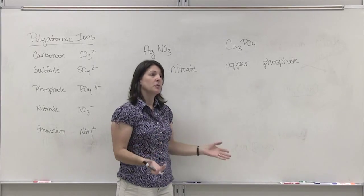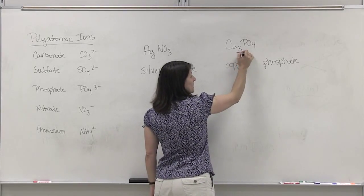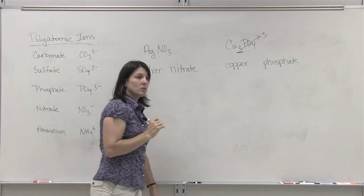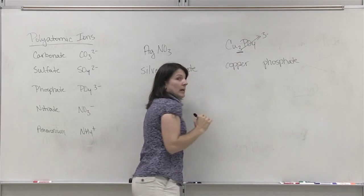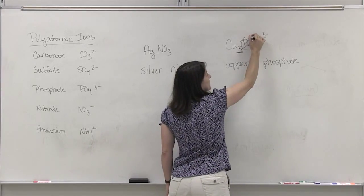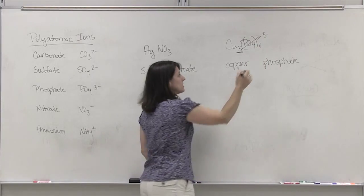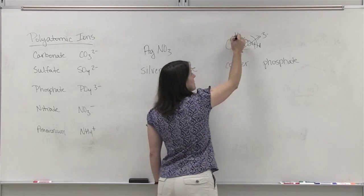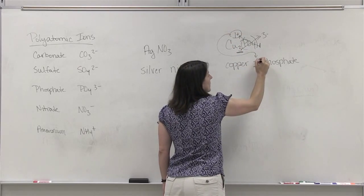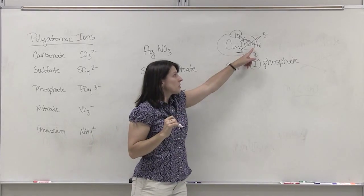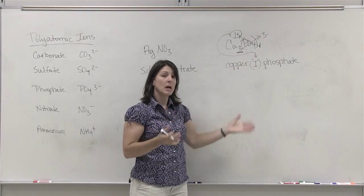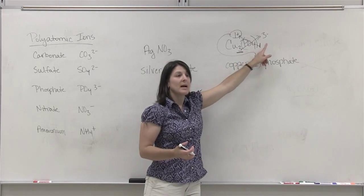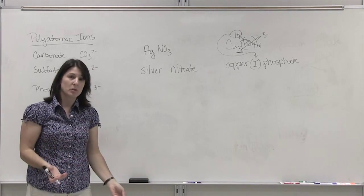To figure out the charge, we have to do the reverse crisscross. Our subscript for copper is 3. Crisscross up, that means the phosphate had a 3 minus charge. How many groups of phosphate do we have? We only have one group. So if you wanted to put this in parentheses, there would have been a 1 here. That is the subscript that you crisscross. The 1. So this was a 1 plus charge. This means that this was copper 1 phosphate. The subscript that is part of the formula for that polyatomic group is not the subscript you use for crisscrossing. That is the formula. The formula never changes. It is the subscript that is outside of that formula that you would use to crisscross to determine the charge of your metals.